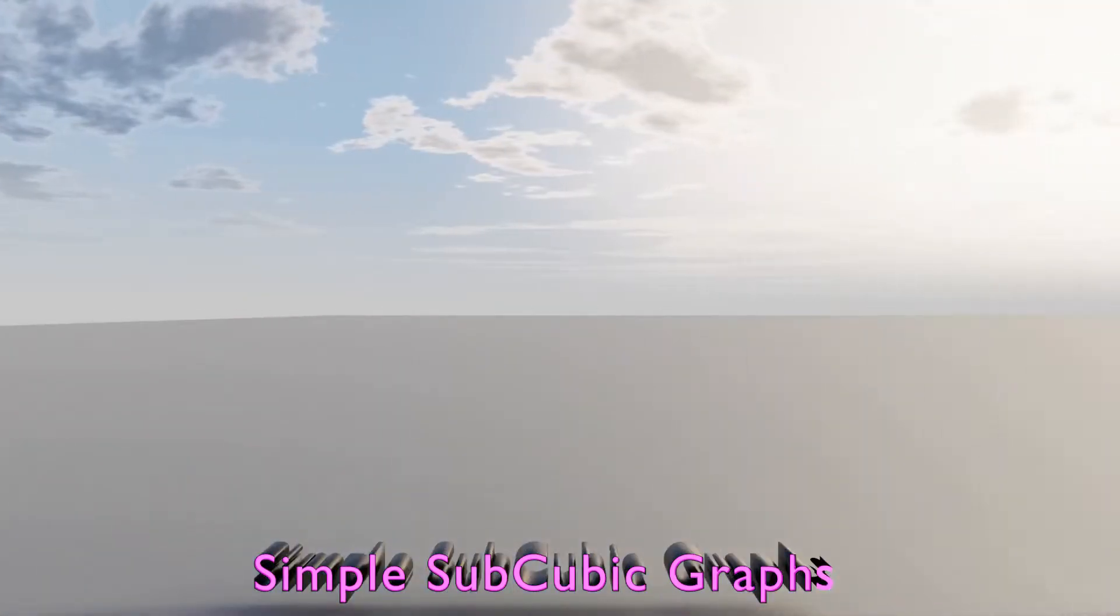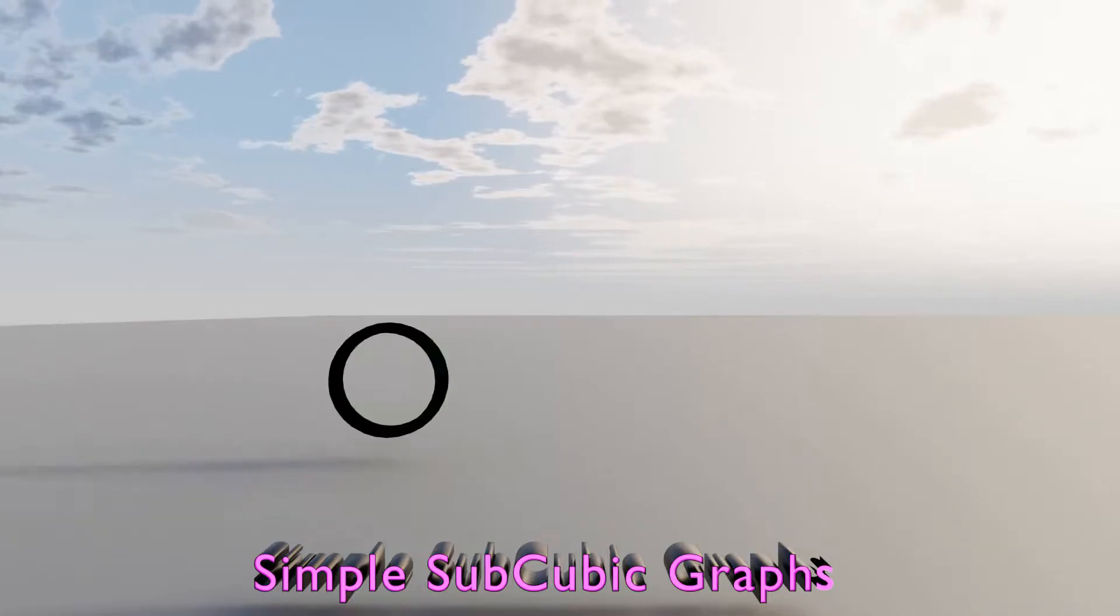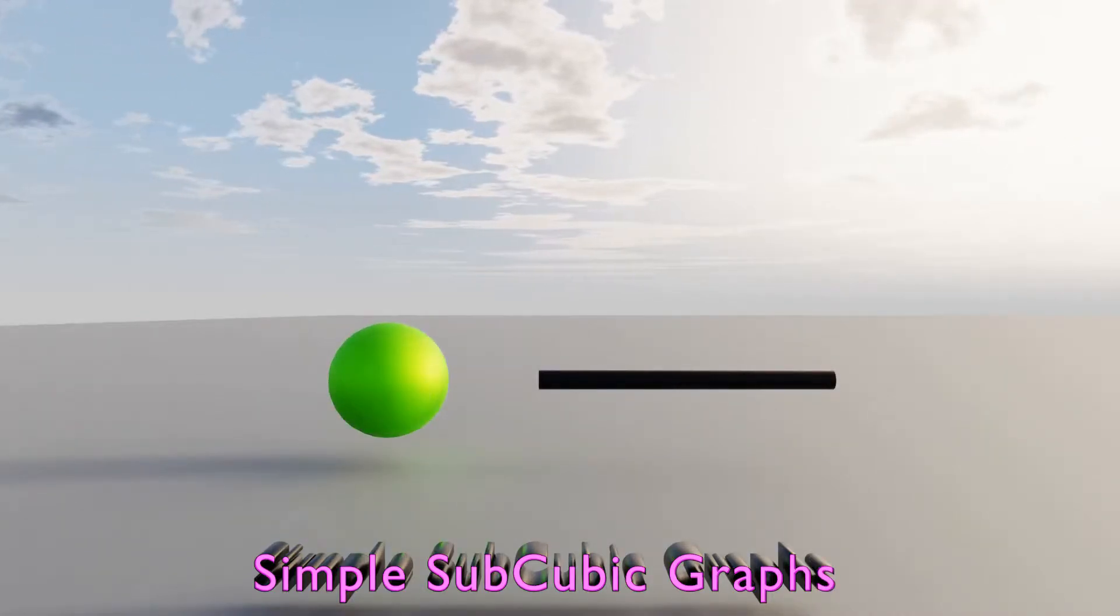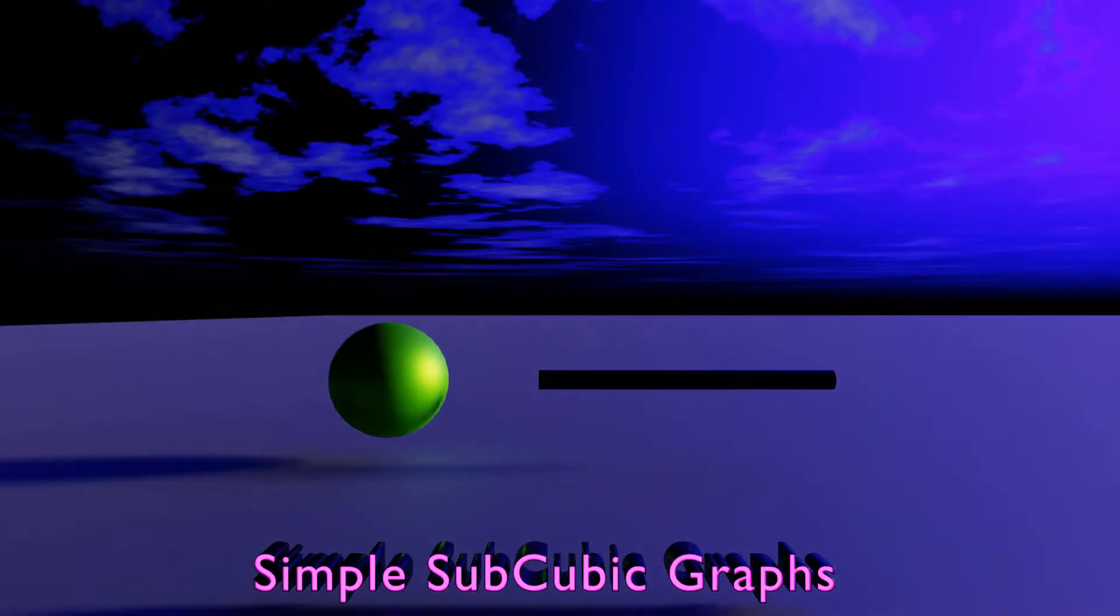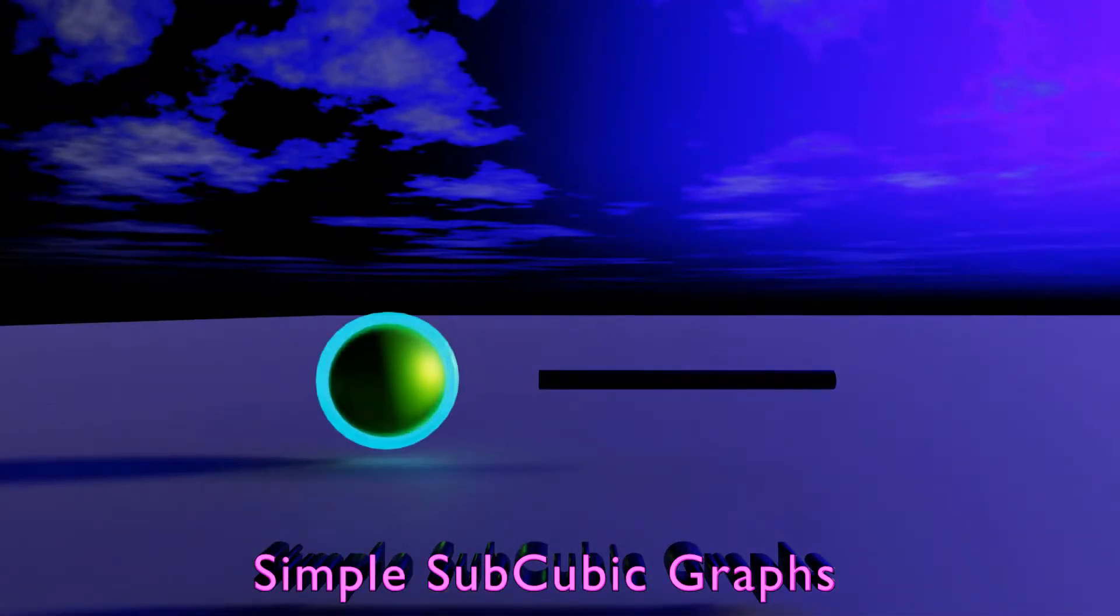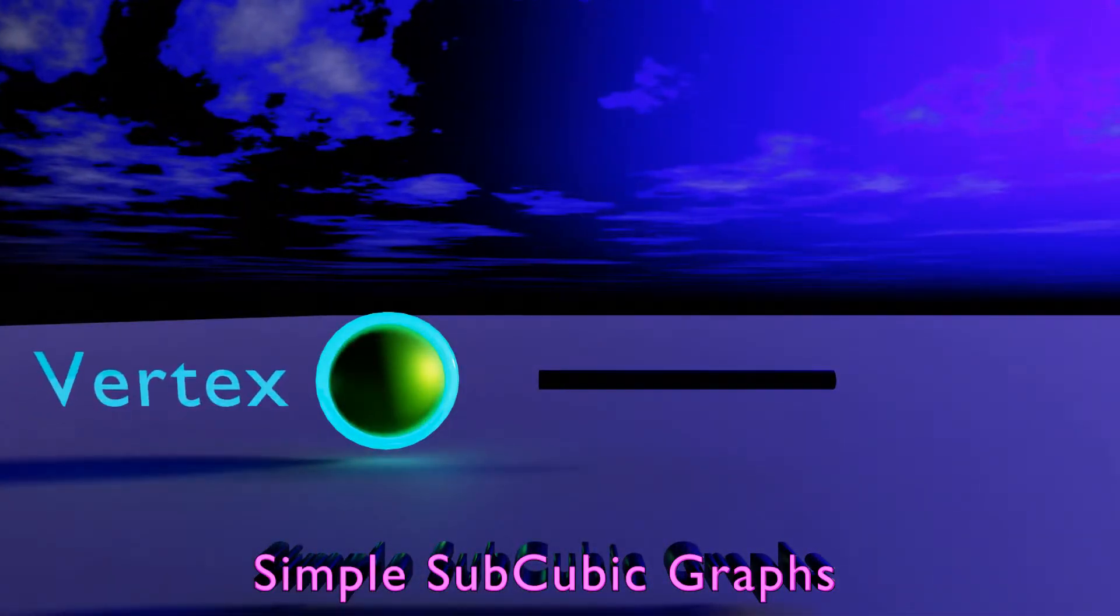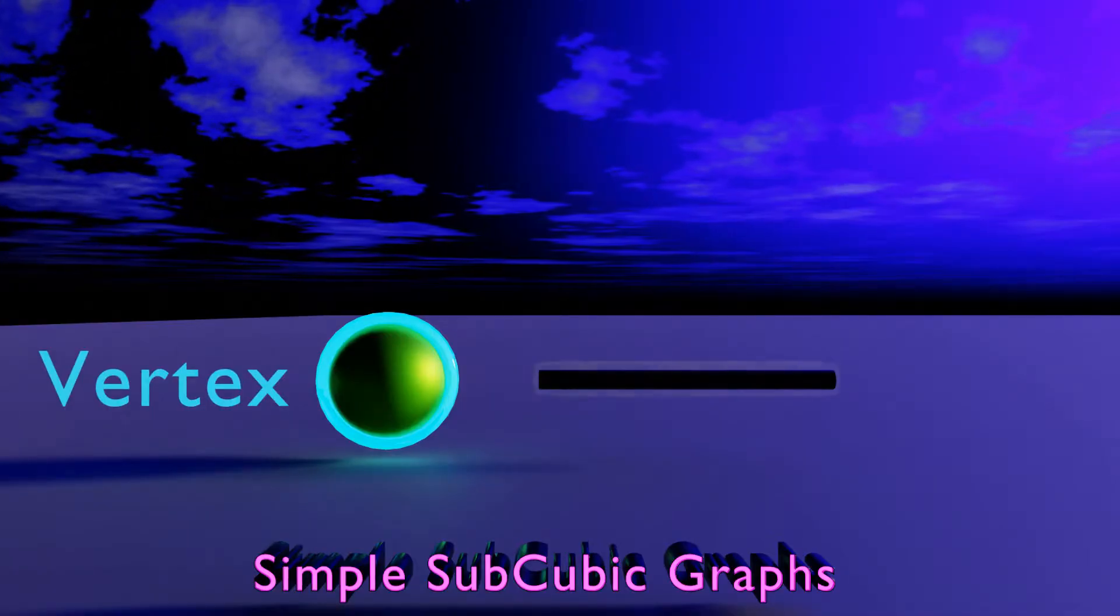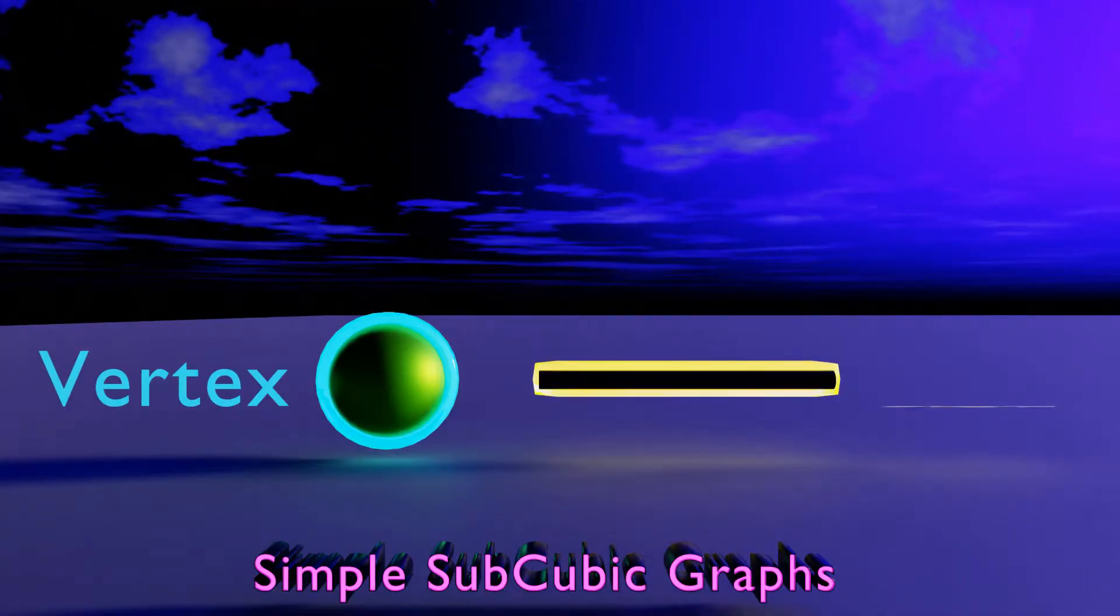Simple Subcubic Graphs have two main components. This is a vertex. And this is an edge.